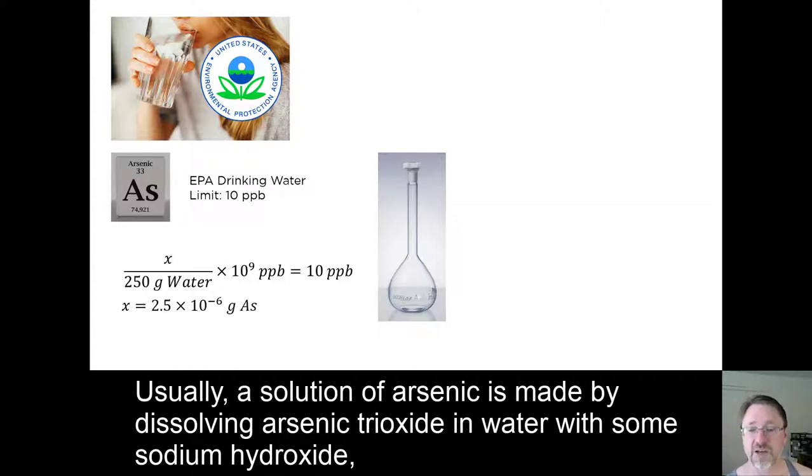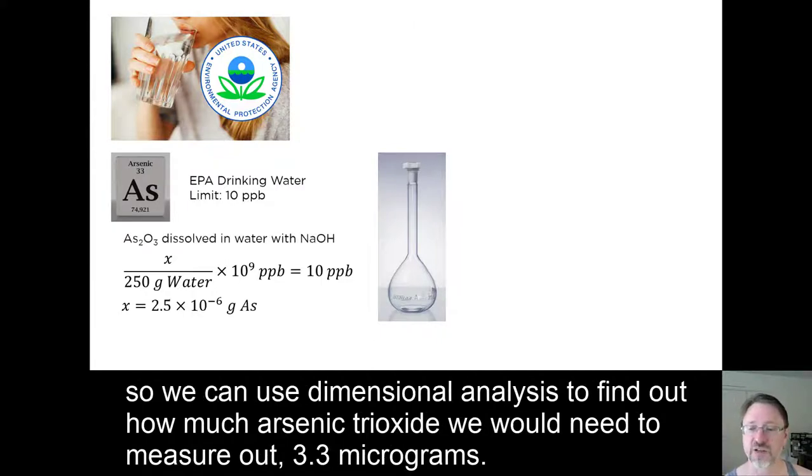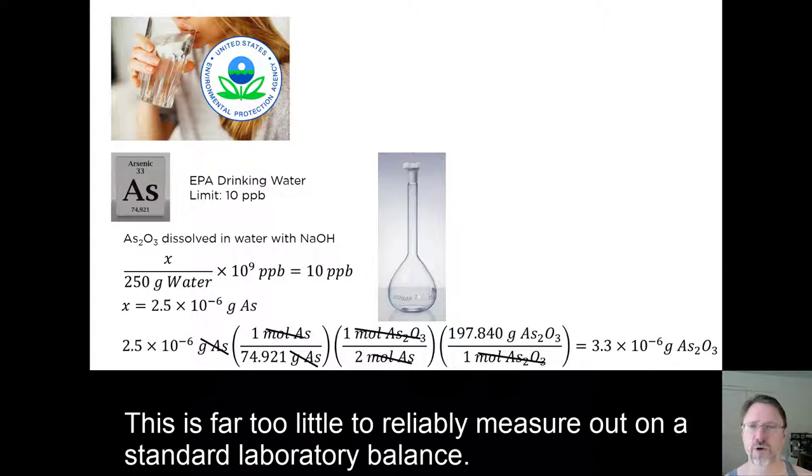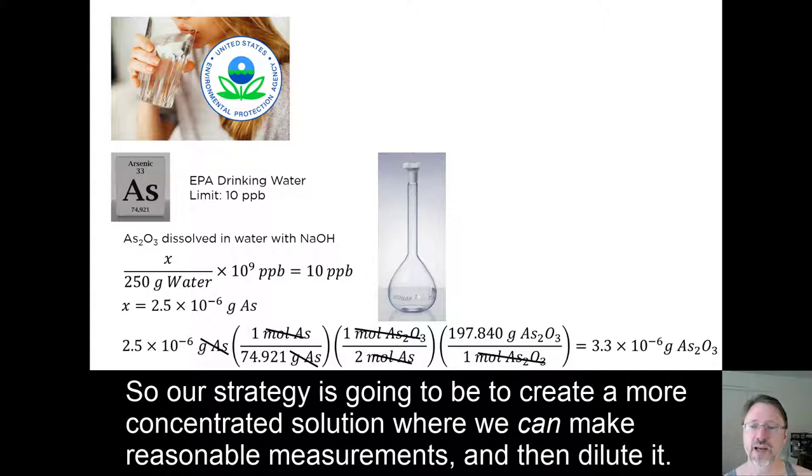Usually, a solution of arsenic is made by dissolving arsenic trioxide in water with some sodium hydroxide. So we can use dimensional analysis to find out how much arsenic trioxide we would need to measure out, 3.3 micrograms. This is far too little to reliably measure out on a standard laboratory balance. So our strategy is going to be to create a more concentrated solution where we can make reasonable measurements, and then dilute it.